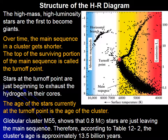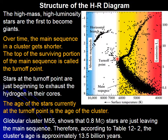This is Messier 55. It shows that stars of about 0.8 solar masses — a little less than our own Sun — are just leaving the main sequence. That means this cluster is approximately 13.5 billion years old, which means it was formed when the universe was about 1 billion years old.